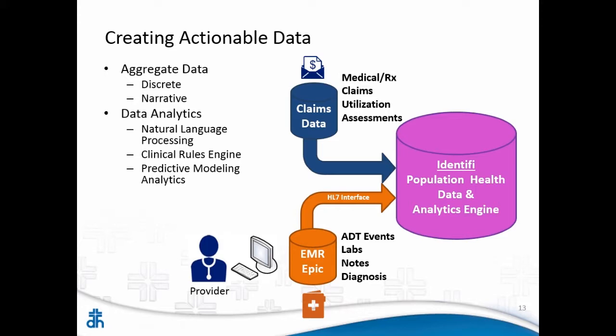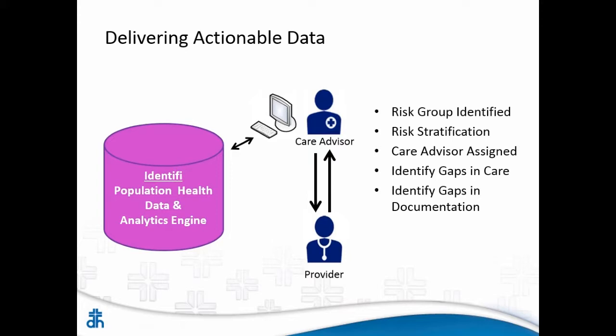Those 5 are really our drivers and probably need more attention because of certain things about them, their history, or what's going on. Once that information is there, you need to deliver it back to the people who provide care. Care advisors are able to log into our Identify analytics system and pull out information about these patients. It will say: these are the patients we need to be most concerned with, these are the patients who have gaps in their care, who are at high risk of having problems.